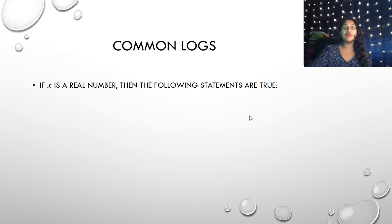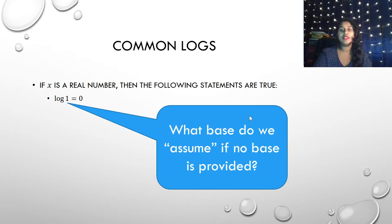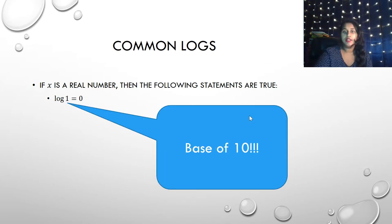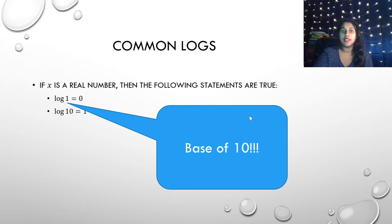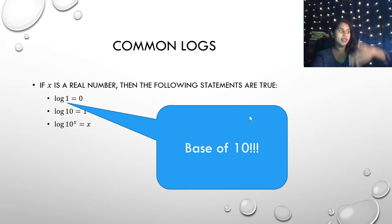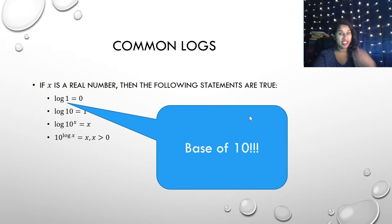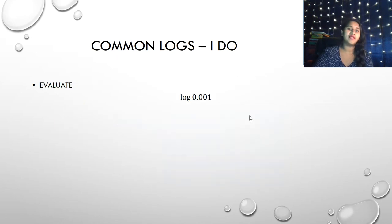Let's talk about some common logs. Log of 1 is 0 — we knew that. What base do we assume if no base is provided? We assume a base of 10. So log base 10 of 10 equals 1. Log base 10 of 10 to the x equals x because you can cross it all out. And 10 to the log x equals x. These are all common log properties assuming base 10.